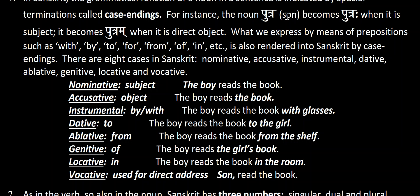Now we'll understand what the case endings mean in English before touching on the Sanskrit. Nominative is the subject — for example, in 'the boy reads the book,' the boy is nominative. Accusative is the object — in the same sentence, the book is the direct object, so the book takes the accusative case.